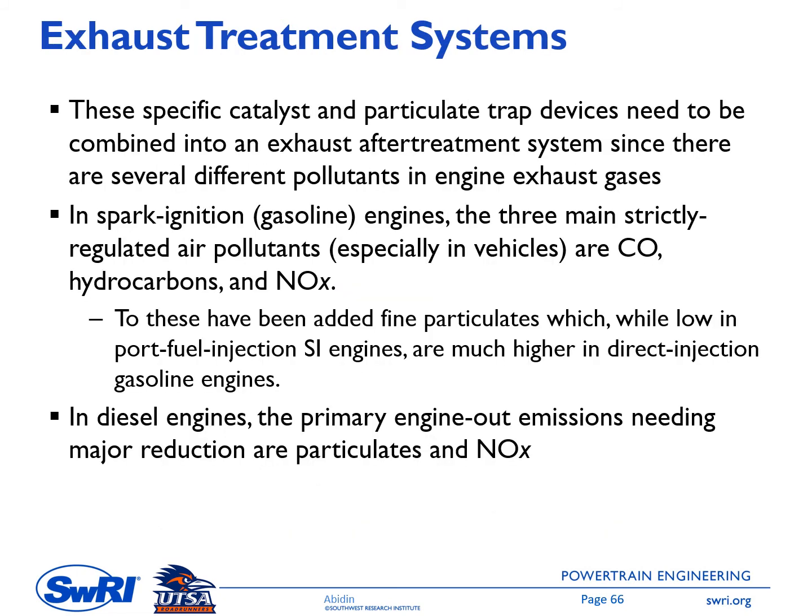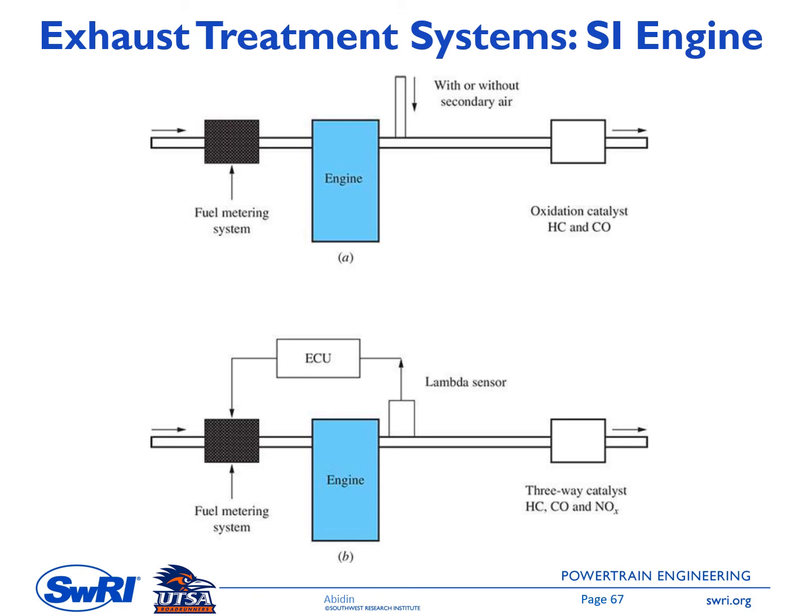Looking at the overall exhaust treatment system: in the previous slides, we reviewed specific catalysts for HC, CO, and NOx reduction. We can also have all three removed at once with a three-way catalyst, which is typical in spark ignition engines. We also have a particulate trap device to reduce particulate emissions. In spark ignition engines, a three-way catalyst removes the three main strictly regulated air pollutants: CO, hydrocarbon, and NOx. In diesel engines, the primary emissions needing major reduction are particulate and NOx.